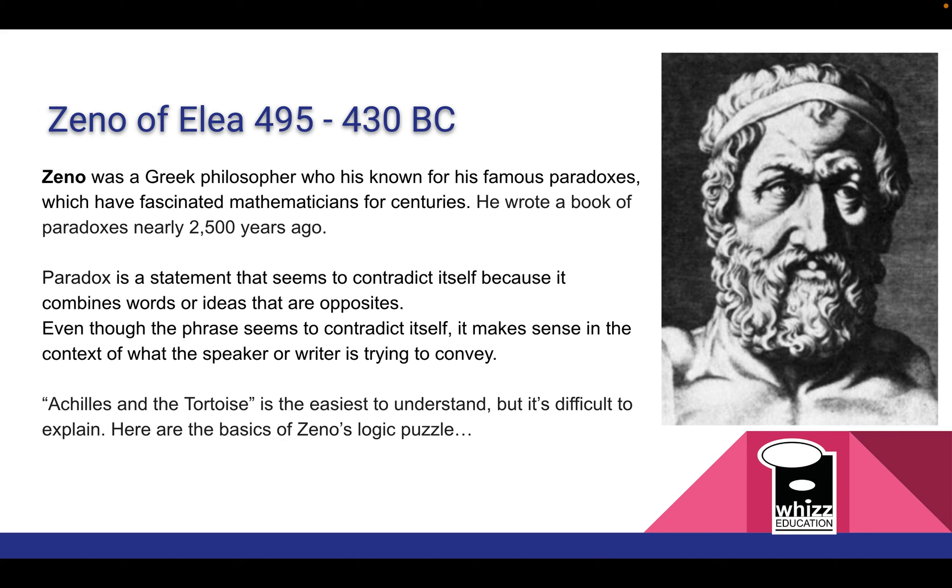Zeno was a Greek philosopher from many years ago and he was known for his famous paradoxes which have fascinated mathematicians for centuries. He wrote a book of paradoxes nearly 2,500 years ago.